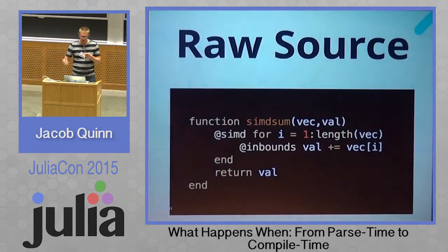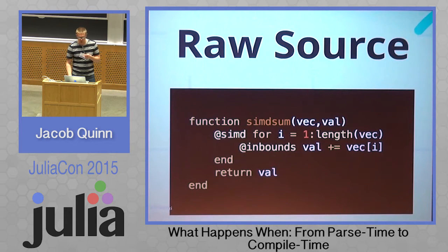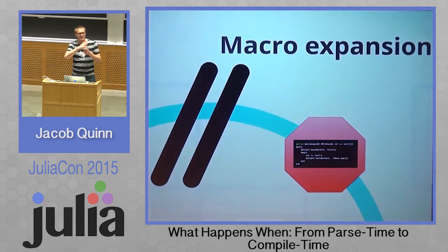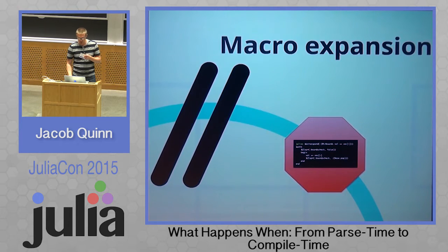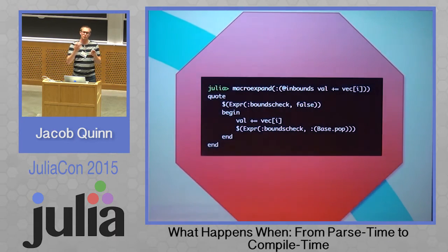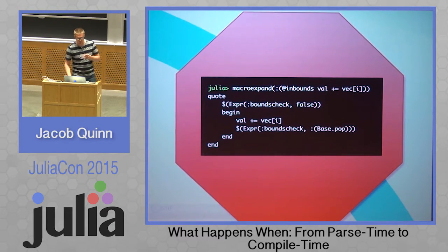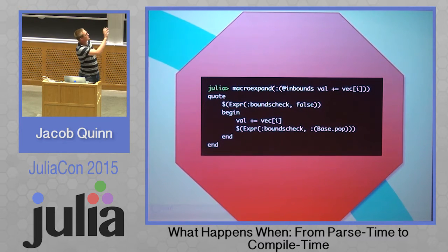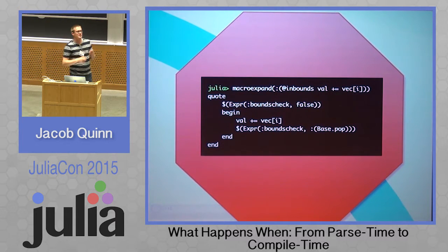We start off with raw source code. Here's a simple function definition — we're doing a for loop with a SIMD and a couple of macros in there. What happens first in the entire scheme of things is macro expansion. We have a tool to look at what happens when we have a macro and expand it. We can see that when we put the @inbounds macro there, it splits out to the expression where we have bounds check false, and then it puts it back on at the end of the expression.